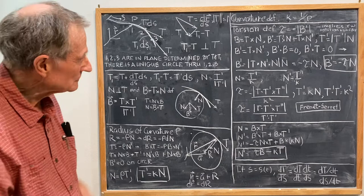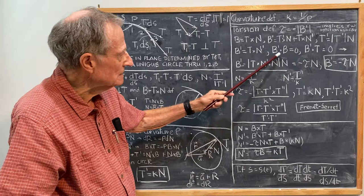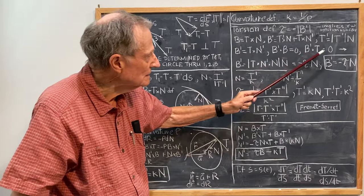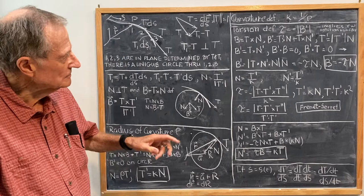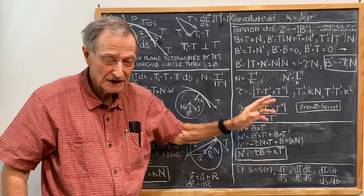From that, we have B prime is equal to T cross N prime. Then we note that B prime dot B is equal to zero because B dot B is a constant. If you differentiate that with respect to S, you get B prime dot B equals zero. And we also have that B prime dot T is equal to zero because T cross N prime dot T is the volume determined by the three vectors T, N, and T, which is zero. So I'm pulling some vector calculus on you here.